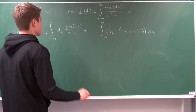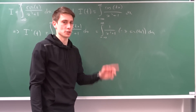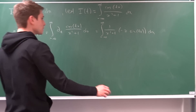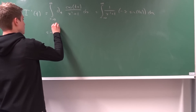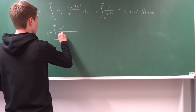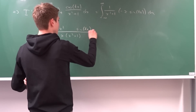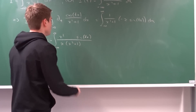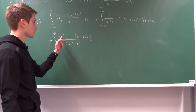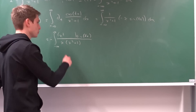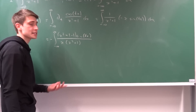Now we do some algebraic manipulation. We multiply the numerator and denominator by x over x, which doesn't change anything. Bringing the minus to the outside, we have the integral from minus infinity to infinity of x² over (x·(x² + 1)) times sine(t·x). We can also add 1 and subtract 1 — adding zero doesn't change anything — so we have plus 1 and minus 1 in the numerator.